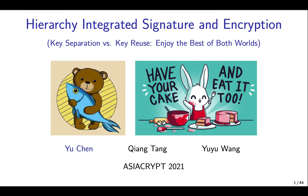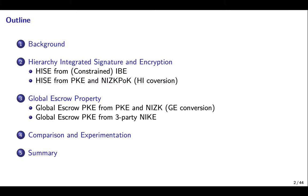Hi everyone, this is Yuchen. I am very happy to present our paper entitled Hierarchy Integrated Signature and Encryption. This is a joint work with Chang Tang and Yu Yu Wang. We will start with the background, then introduce our new notion called Hierarchy Integrated Signature and Encryption, then discuss its extension with global escrow property. Finally, we make a comparison between related schemes.